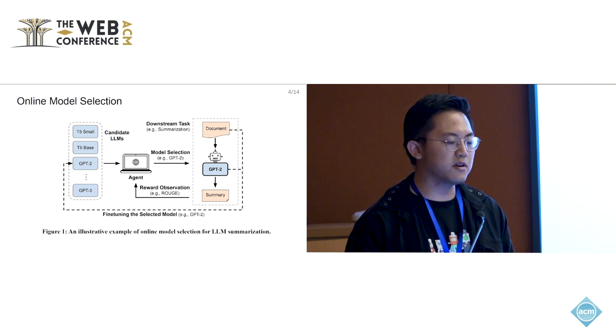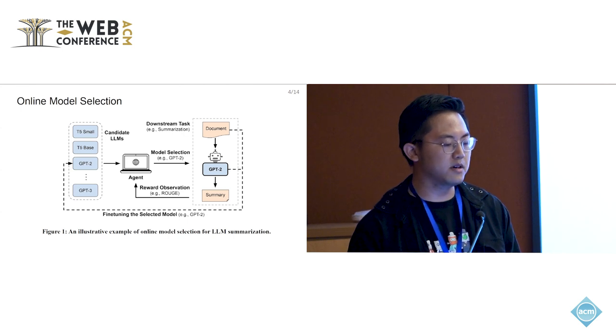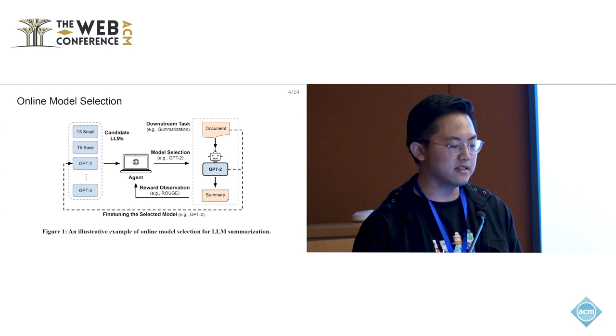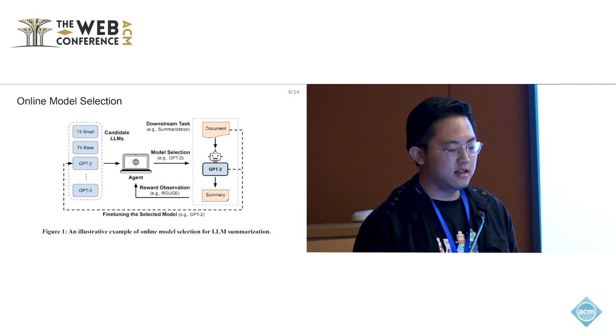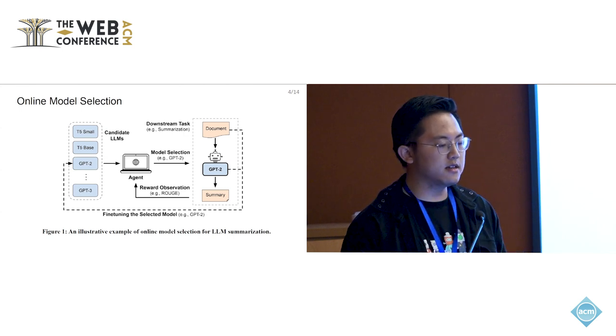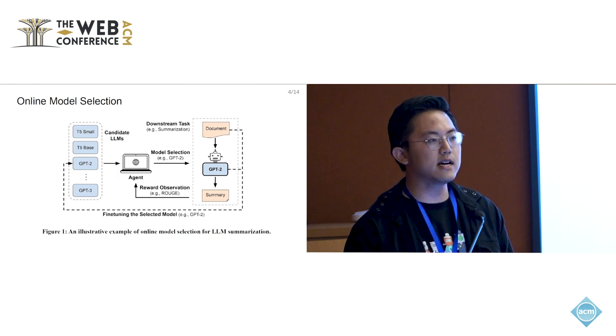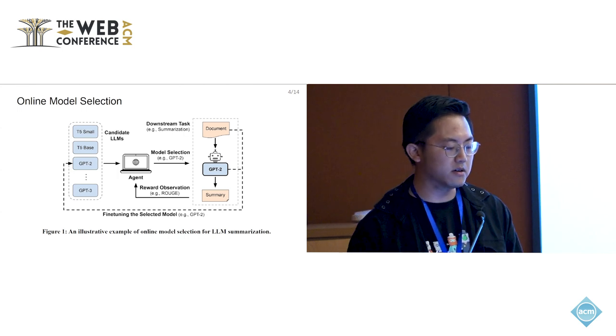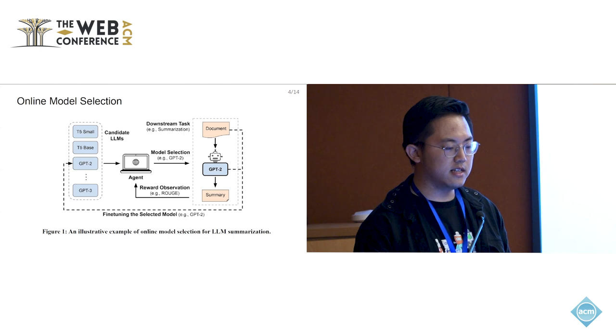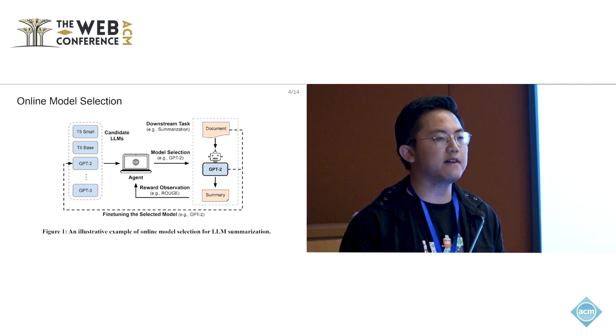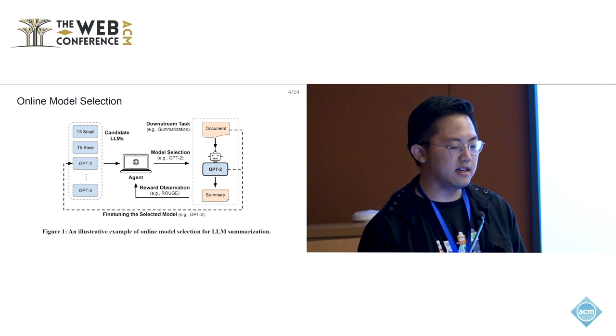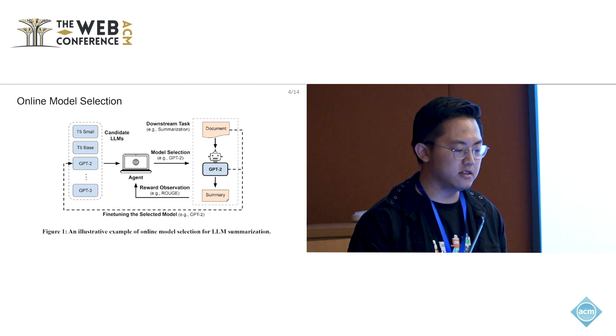In this process, the most important step is how do we select the most promising model to be trained on this batch of data samples. As we can see, in this online model selection process, the model selection happens interactively with the model training or fine-tuning. So, it is very important to know how do we predict the model performance after training in order to dynamically change our selection strategy during model training.